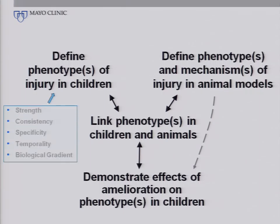If you look at Sir Hill's criteria, five of them are really related to the definition of the phenotype. One of them — plausibility — is related to the definition of phenotype and mechanisms in the animal models and the linking of the phenotypes. And experiment is related to the amelioration that we might be able to achieve in children.